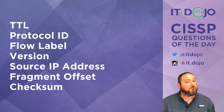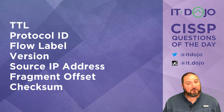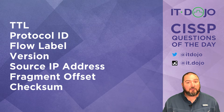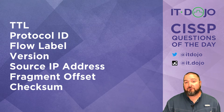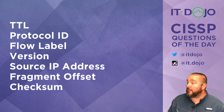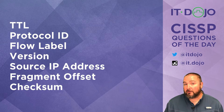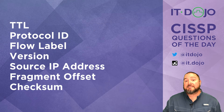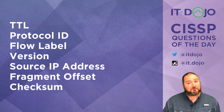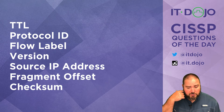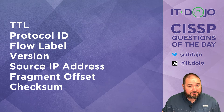Time to live — absolutely, time to live is a field in an IPv4 header. It is not a field in an IPv6 header. Protocol ID — Protocol ID is absolutely a field in an IPv4 header. It does not exist in an IPv6 header. So that's not the right answer either.